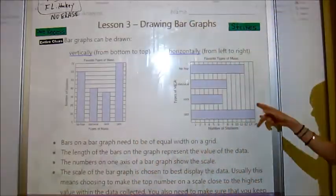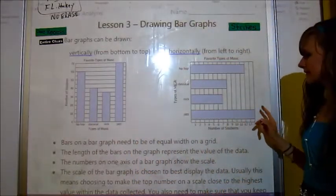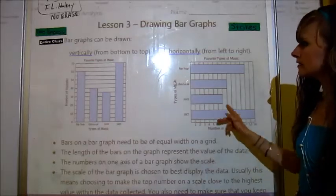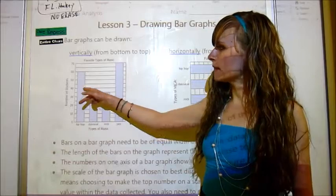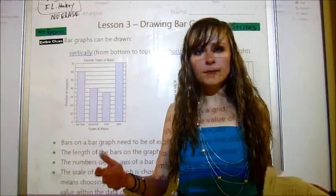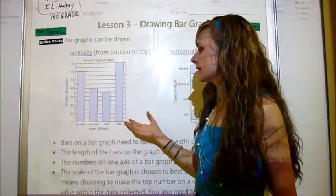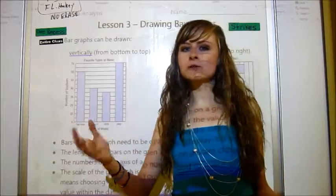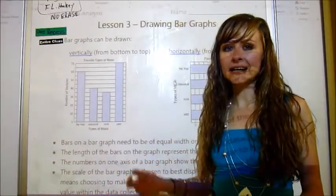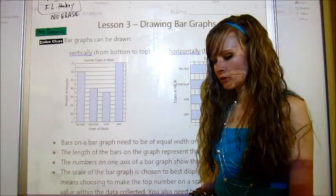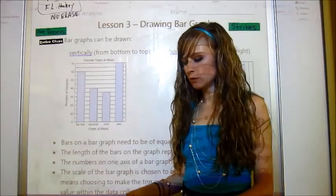You want your top number to be around the highest value. So this one's exactly the highest value 70. Some people might have made it go up to 80 or 75. This one looked at the biggest data 14 and then also looks at the other data. These ones always go up by fives, so they're all multiples of five, so it made sense to do fives. Sometimes it makes more sense to do even numbers. It just depends on the data that you have.